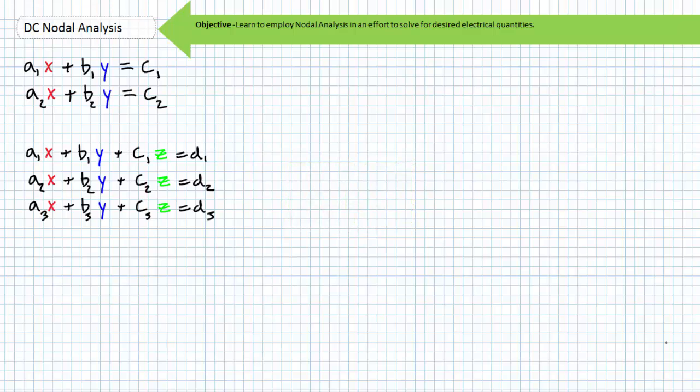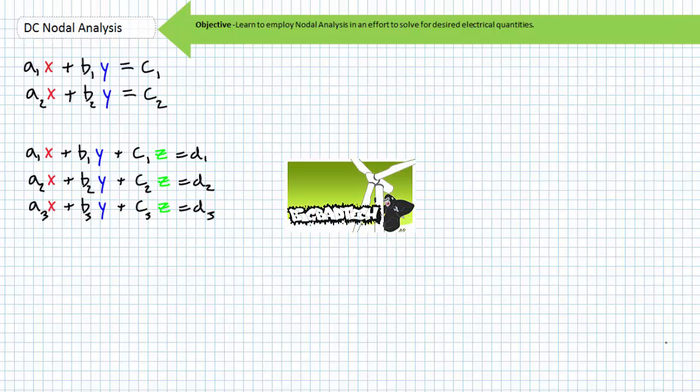Nodal analysis necessitates nearly identical math skills we already reviewed in the mesh analysis lecture, and this lecture operates under the presumption you have mastered these skills. Specifically, you need to algebraically manipulate multivariable equations into the general format of AX plus BY equals C for a two-variable equation, or AX plus BY plus CZ equals D for a three-variable equation, where A, B, C, and D are constants. You also need to enter matrices into your scientific calculator and use the reduced row echelon format function to solve for unknown quantities X, Y, and sometimes Z. Alternatively, you can manually calculate unknowns using determinants.